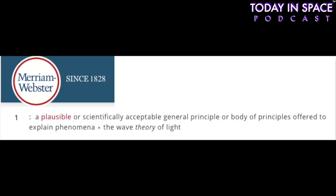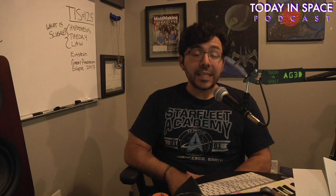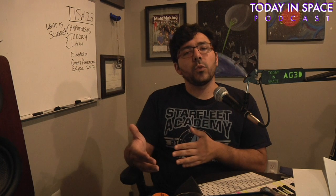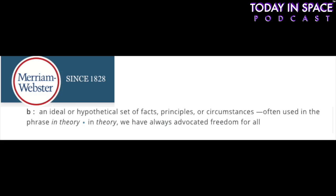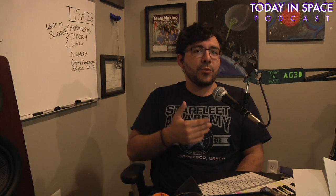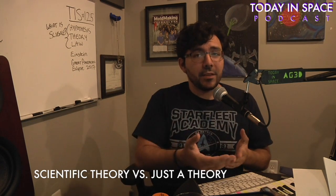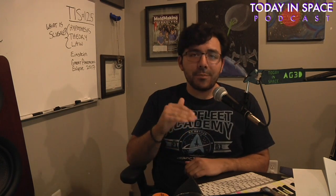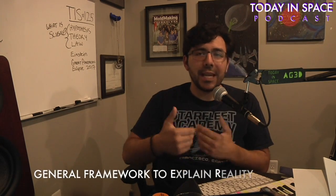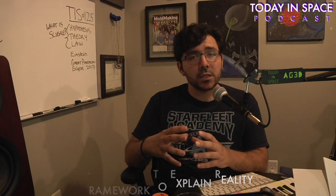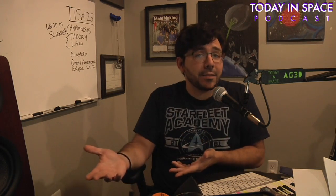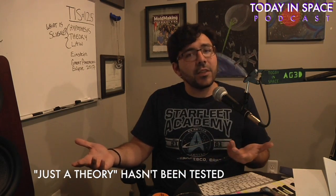According to Merriam-Webster.com, a scientific theory is a plausible or scientifically acceptable general principle or body of principles offered to explain phenomena — not to be confused with the general use of the word theory, defined as an ideal or hypothetical set of facts, principles, or circumstances, often used in the phrase 'in theory.' The difference between just a theory and a scientific theory: a scientific theory uses mathematics and science to explain a general framework of how something in reality works, while a non-scientific theory can be simply a hypothesis without testing done on the theorizer's part.